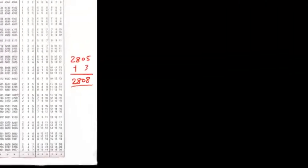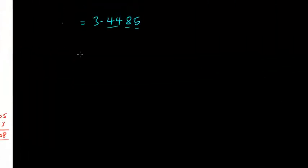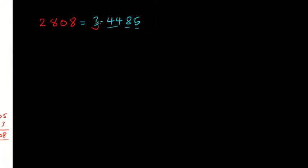So we'll write that as our number: 2, 8, 0, 8. That's our number. But we can't just leave our answer like this. Notice here we have our integer as 3. Because our integer is 3, it means that we must have 4 numbers before the decimal point — 1, 2, 3, 4 numbers before our decimal point. And that's okay. Let's try another one.